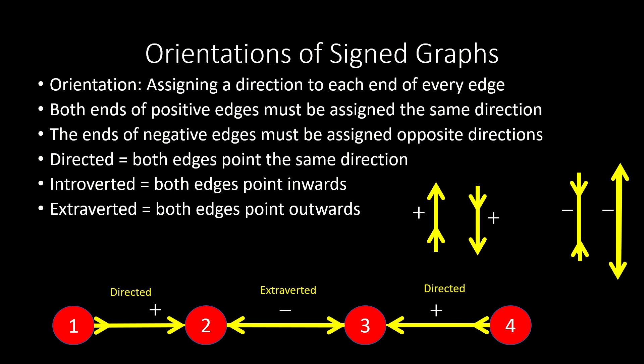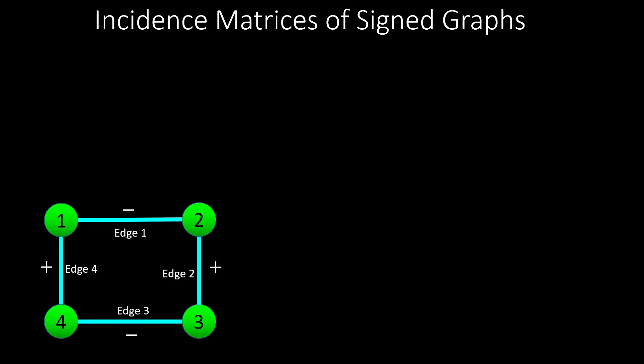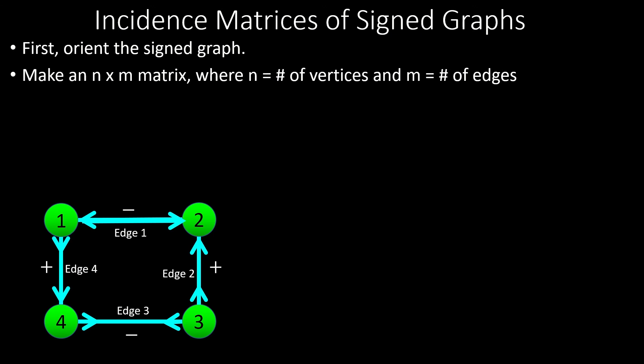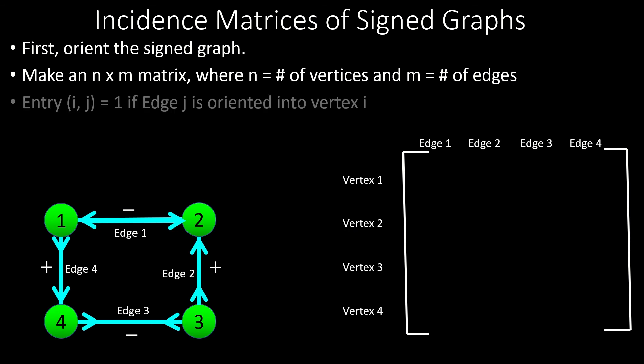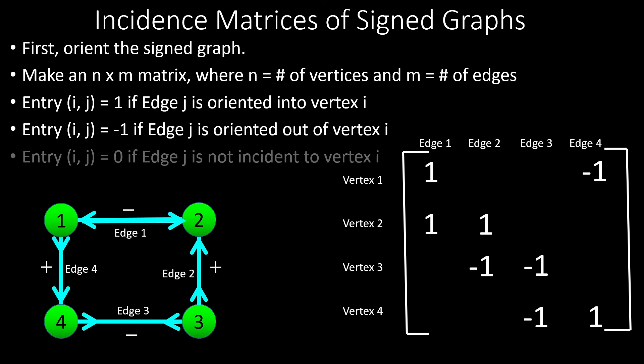Now that we have these orientation rules in place, let's look at the incidence matrix of a signed graph. To find the incidence matrix, first orient the graph in any permissible way. Then generate a matrix where the rows correspond to vertices in our signed graph, and the columns correspond to edges in our signed graph. The entry ij in our matrix is positive 1 if edge j is oriented into vertex i. The entry ij is negative 1 if edge j is oriented out of vertex i. Finally, the entry ij is 0 if edge j is not incident to vertex i.